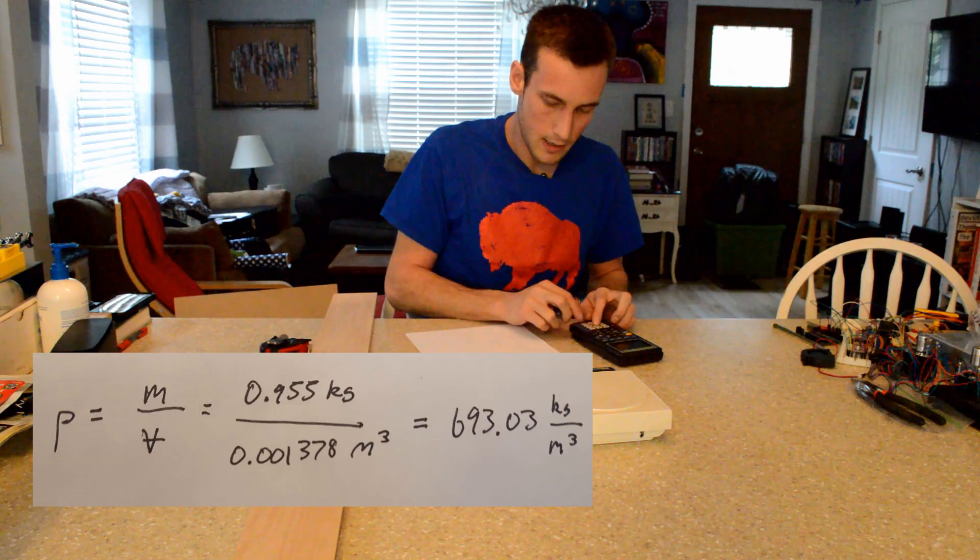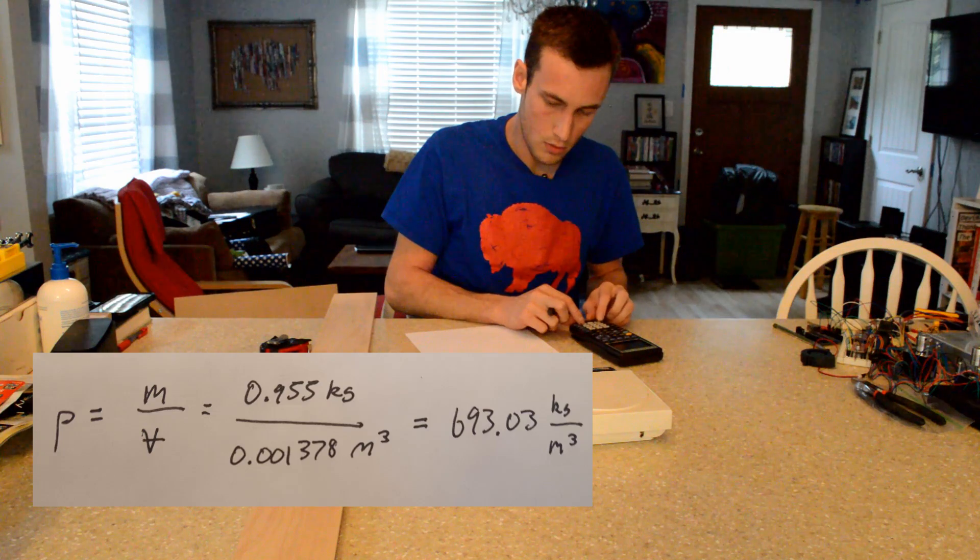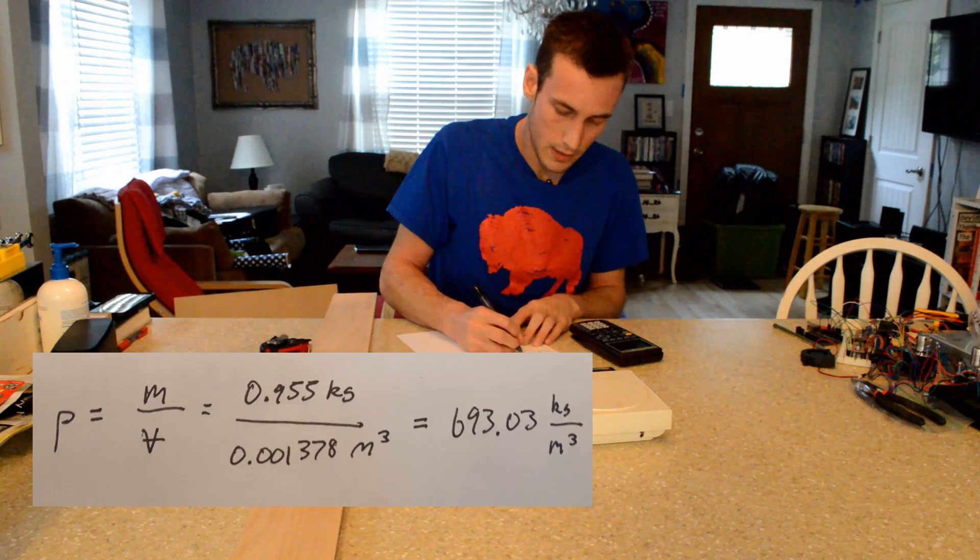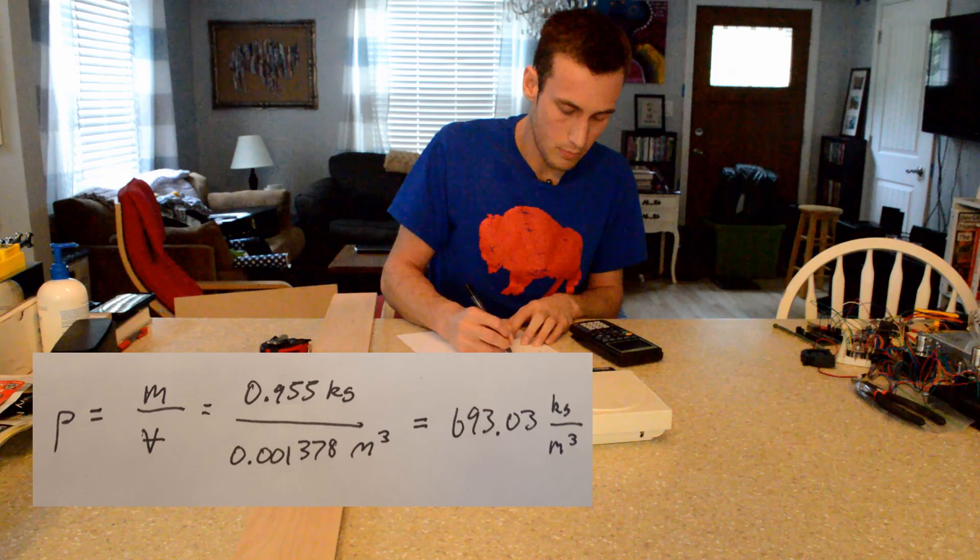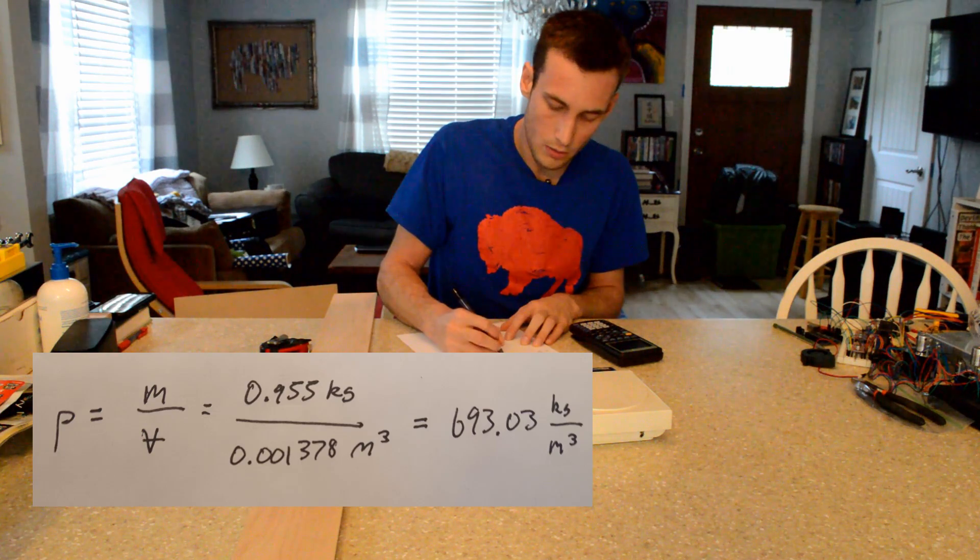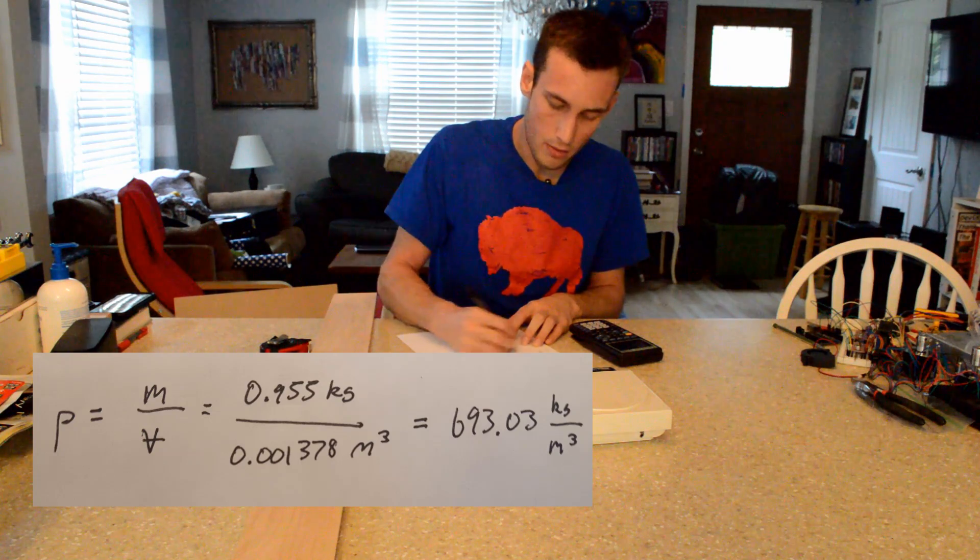And we get 0.955 divided by 0.001378, and that gives us our final density of 693.03 kilograms per meter cubed.